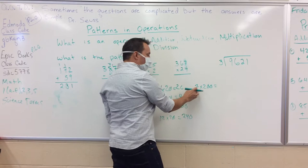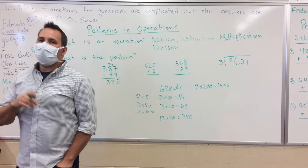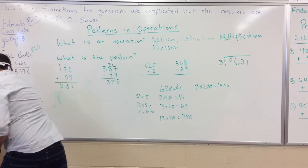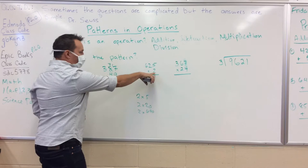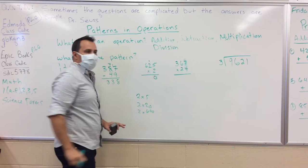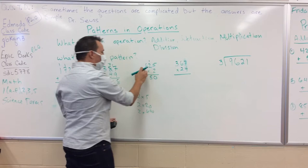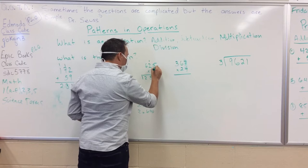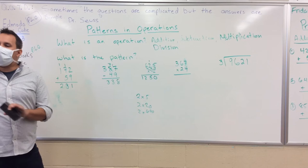For example, 7 times 200: 7 times 2 is 14, add the zeros back — 1400. That's the pattern whenever we're multiplying these numbers. So we multiply 2 by 5, which is 10 — put the 1 up. Then 2 times 2 is 4, plus 5. Then 2 multiplied by 6 is 12. The pattern we learned for multiplication is the same as adding — going ones, tens, hundreds.